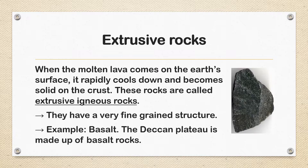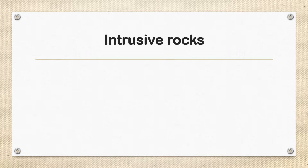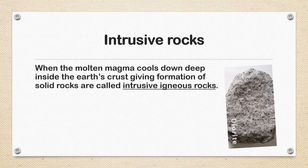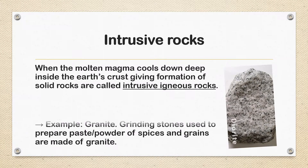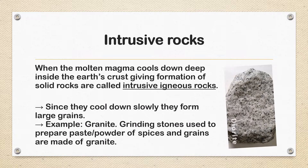The Deccan Plateau is made up of basalt rocks. Intrusive rocks — when the molten magma cools down deep inside the Earth's crust, it gives formation to solid rocks called intrusive igneous rocks. Since they cool down slowly, they form large grains. Example: granite — the powder of spices and grains are ground using granite.